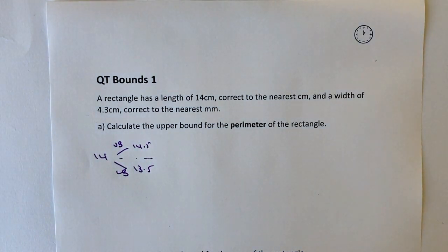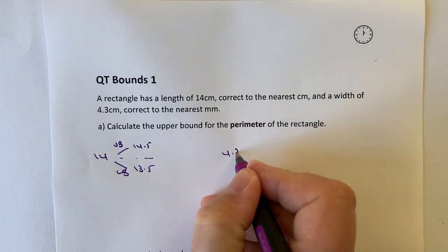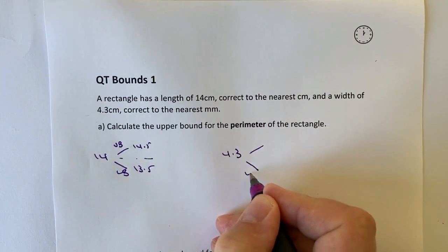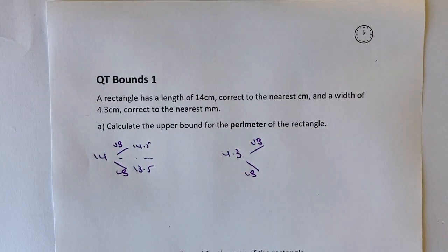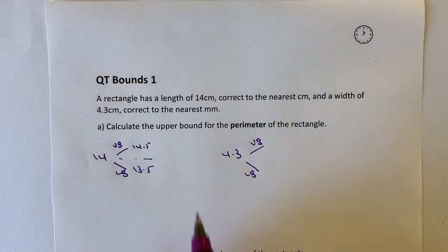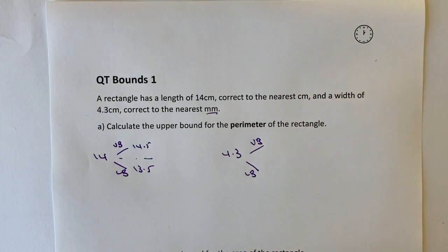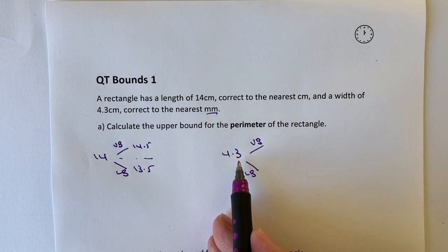Let's have a look now at the number 4.3. And again, we've got this lower bound and upper bound. So the lower bound, and what it says is correct to the nearest millimetre. So a bit of a sneaky one in there, millimetre, which is actually 0.3 here.